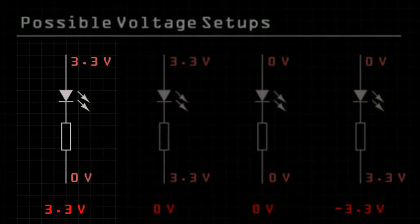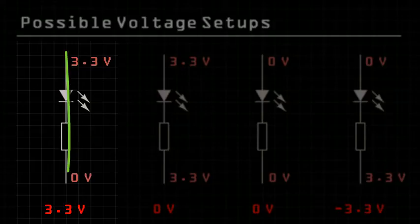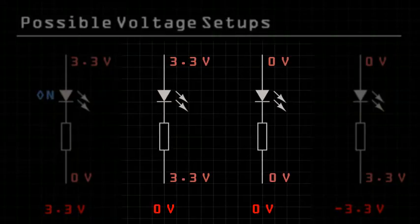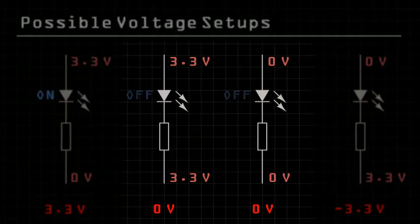In the first case we have a non-zero potential difference. Current will flow from 3.3V to 0V, thus the LED will light. Of course, the two setups in the middle yield a potential difference of 0V, as the voltages are the same on either end. Thus the LEDs will remain off.